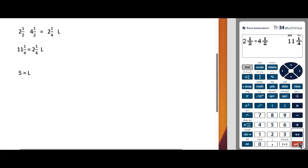At this point in our equation with this 11 and 1 fourth equals 2 and 1 fourth L, to get the L by itself, we're going to need to divide both sides of the equation, because it's being multiplied by 2 and a fourth. So we're going to need to divide on both sides by 2 and a fourth, trying to get the L by itself.